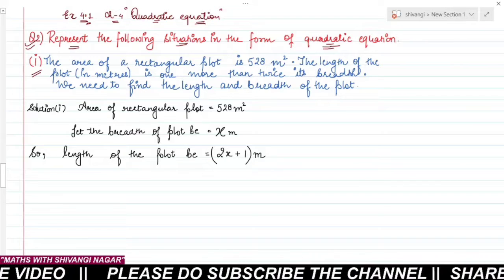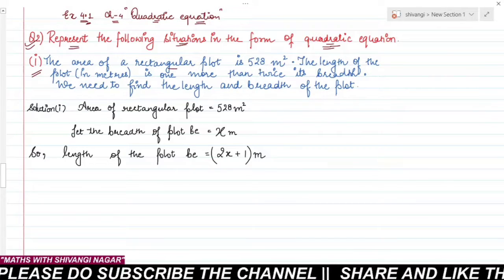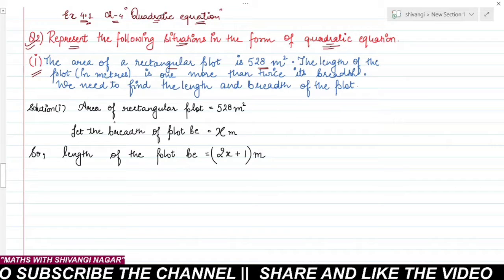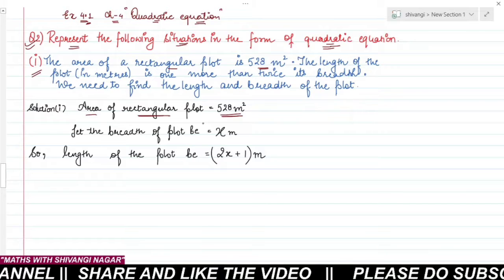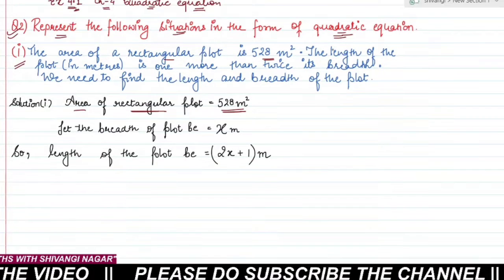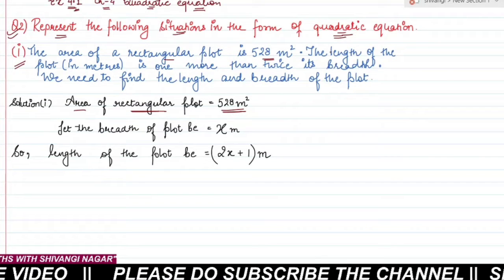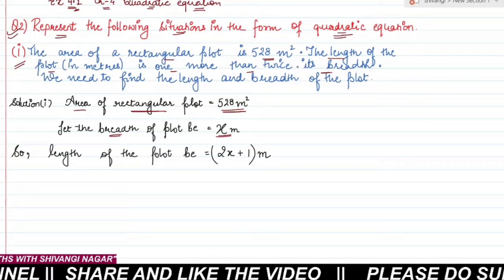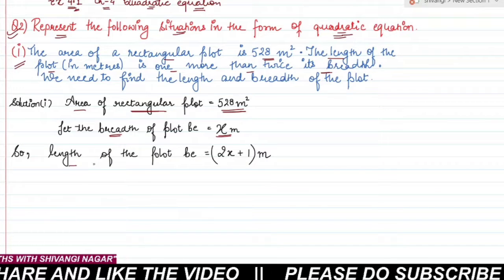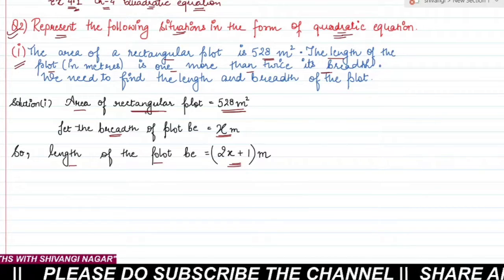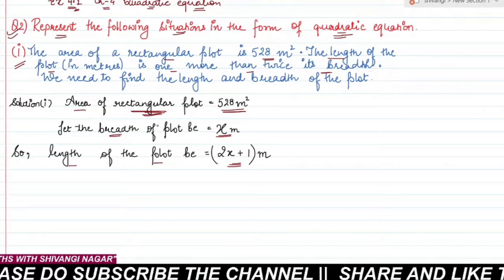The first question says the area of a rectangular plot is 528 square meters. We are also given comparative information between the length and breadth: the length of the plot is one more than twice its breadth. So if we let the breadth be x, then according to this information, the length of the plot is 2x plus 1 meters.